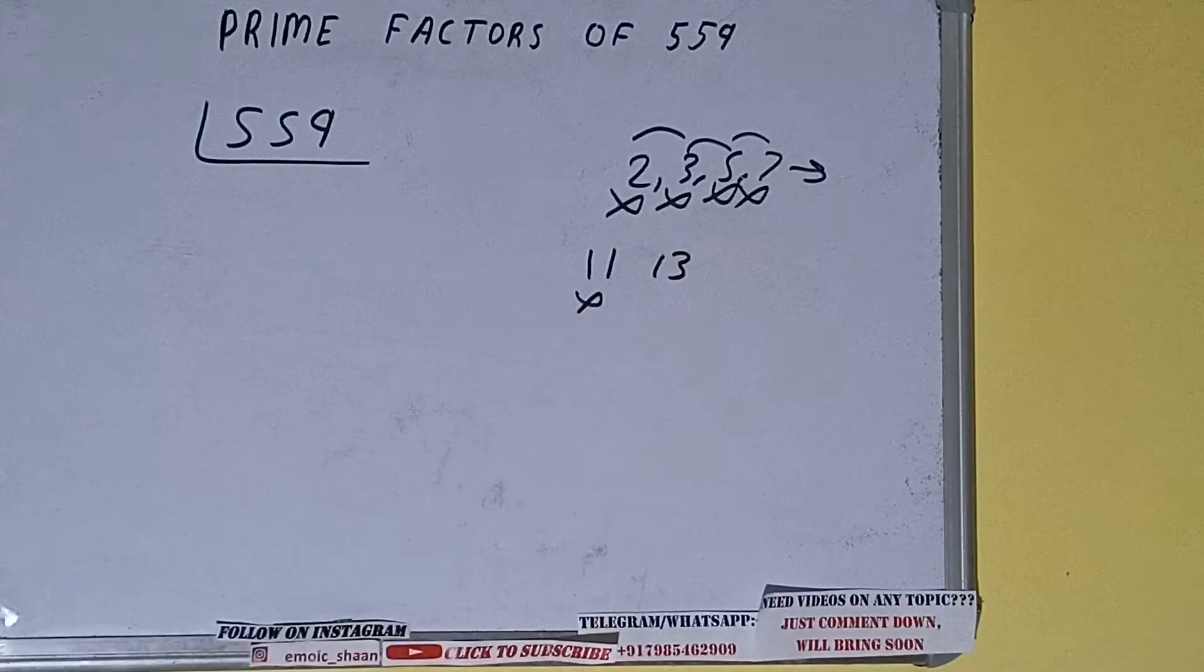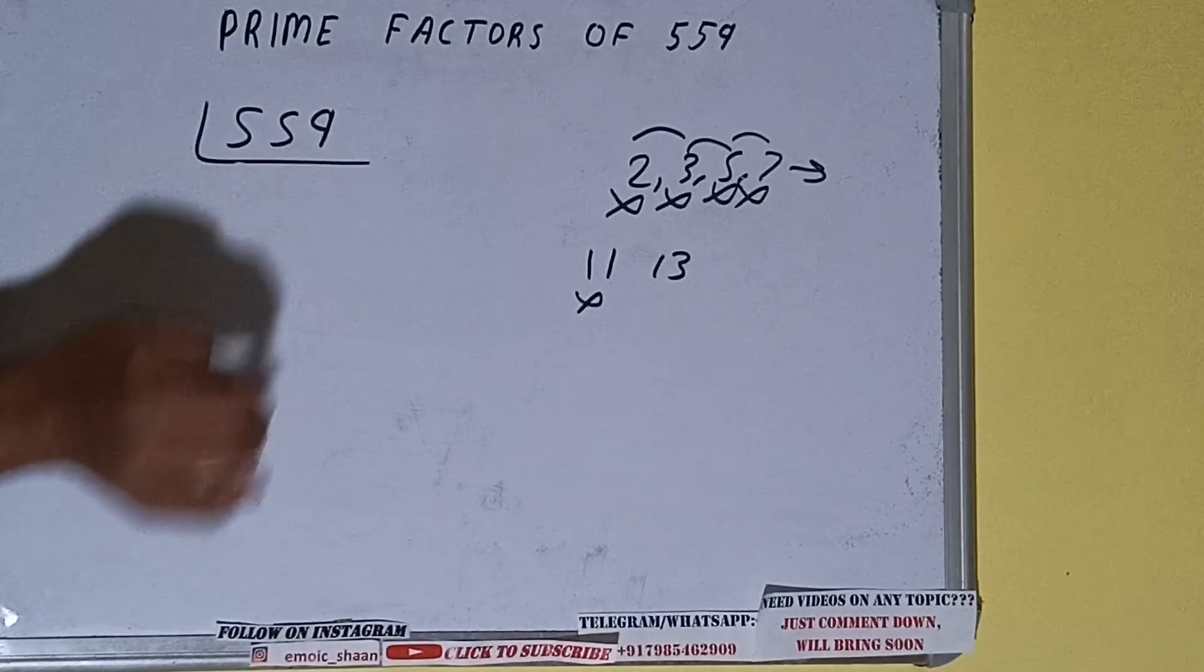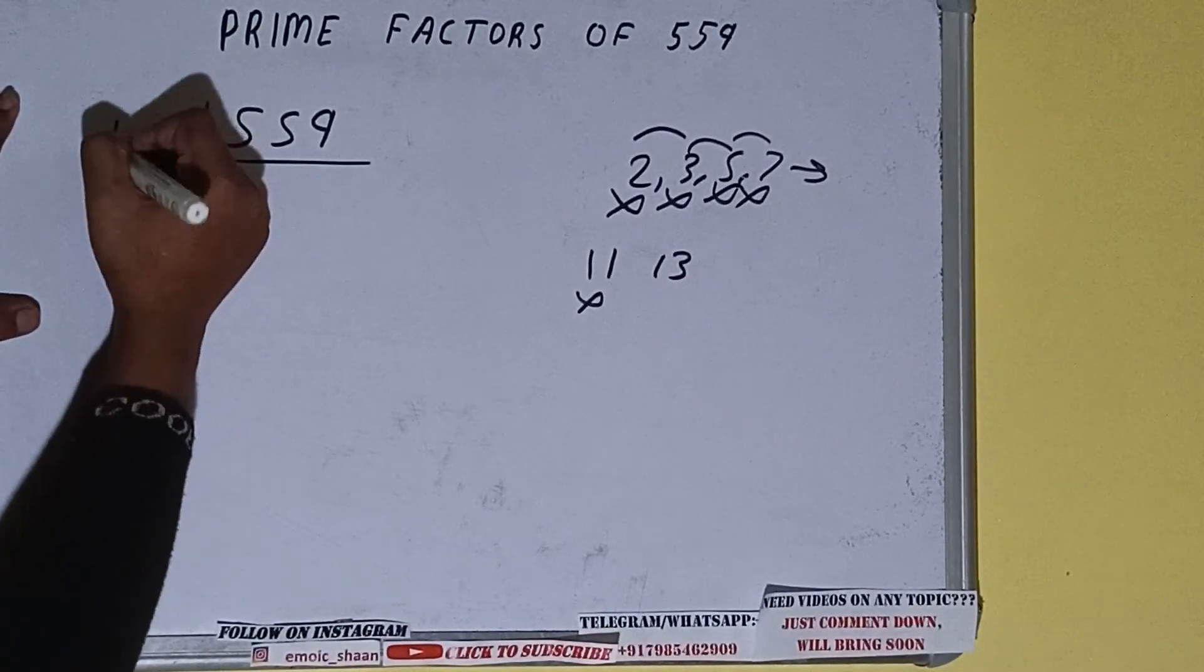Let's check with 13. 13 times 4 is 52, 3, 9... with 13 it is divisible, so divide it.